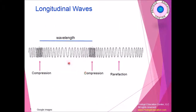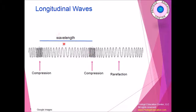Longitudinal waves look like a spring or coil spring. You will see some areas that are really compact and some that are really relaxed. The compact areas are called compression, and the relaxed areas are called rarefaction. The distance between two compressions is the wavelength measured for longitudinal waves.